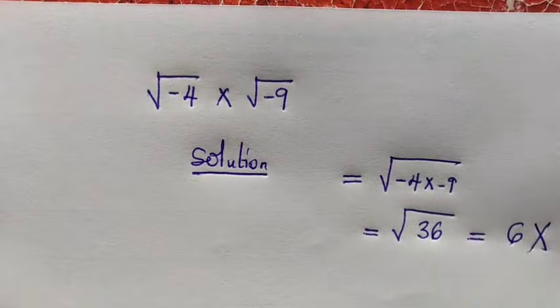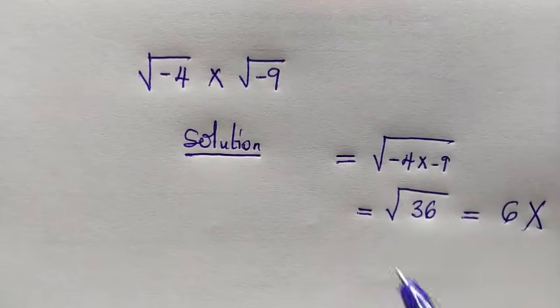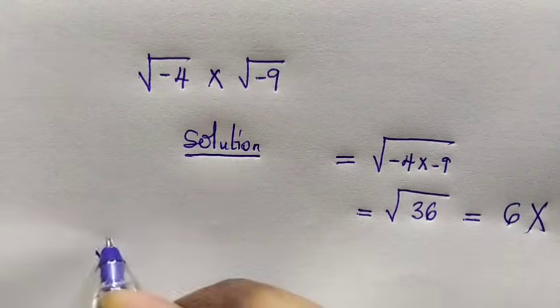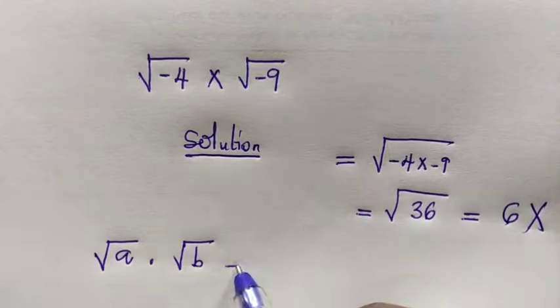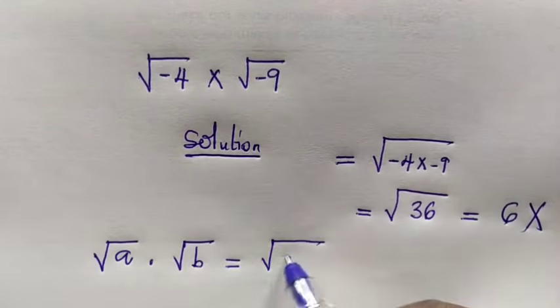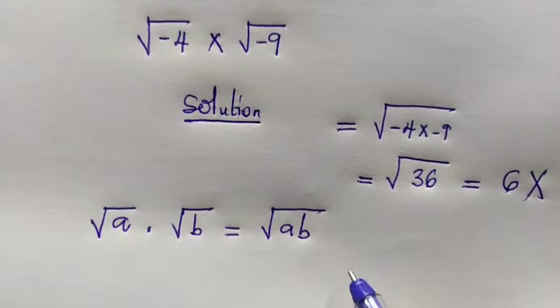But this is obviously wrong, right? Because the property used here is root of A multiplied by root of B is equal to root of A times B. Yes, of course,